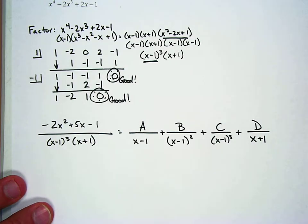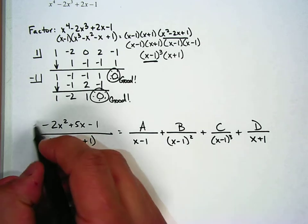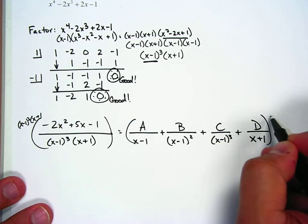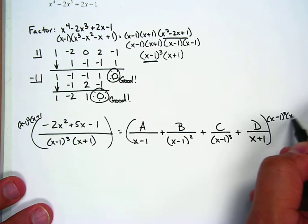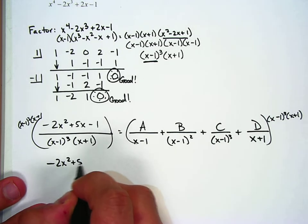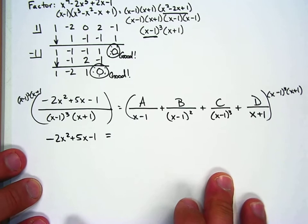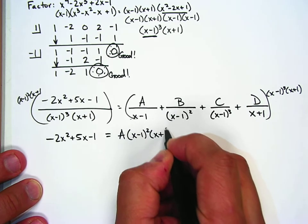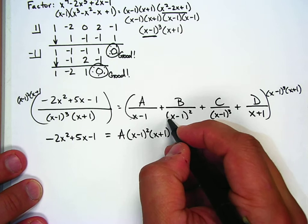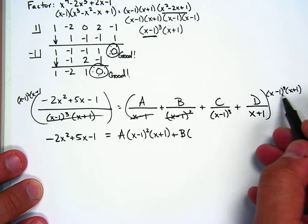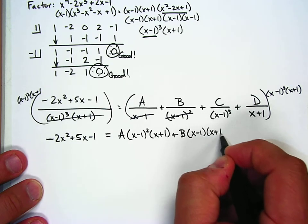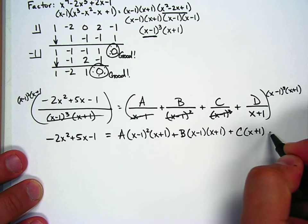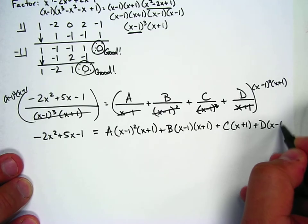When we multiply both sides by the common denominator x minus 1 cubed times x plus 1, the left side denominators cancel. On the right side: A gets x minus 1 squared times x plus 1; B gets x minus 1 times x plus 1; C gets x plus 1; and D gets x minus 1 cubed.